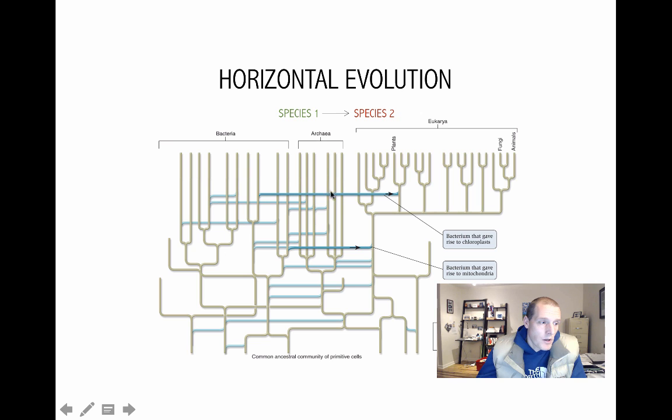And the same thing happened up here, when one bacterium engulfed another, and the bacterium that was engulfed was a photosynthetic bacterium, and that gave rise today to what we call the chloroplast. And so, those are two major events of endosymbiosis, and they are examples of horizontal gene transfer.